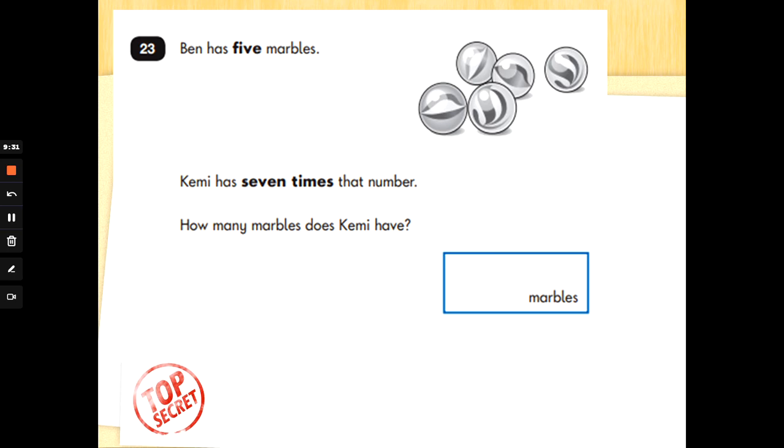Another word problem for us here. Ben has five marbles. Kemi has seven times that number. How many marbles does Kemi have? Let's look at the words in bold. We've got the number word five, and we've got seven times or times seven. So the multiply sign is times. Seven times five or five times seven. Now I can't count in sevens, but I can count in fives. I'm going to put seven fingers up and count in fives. Five, ten, fifteen, twenty, twenty-five, thirty, thirty-five. Well done.